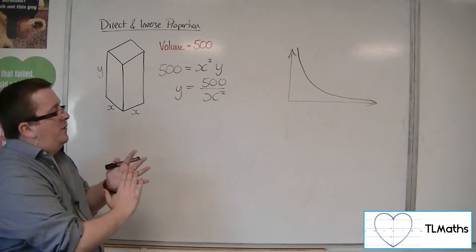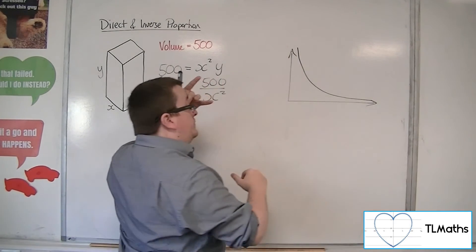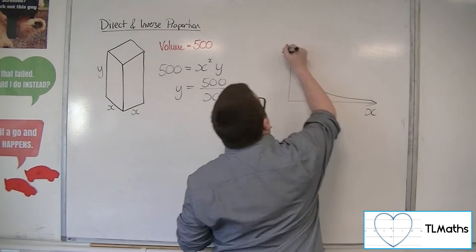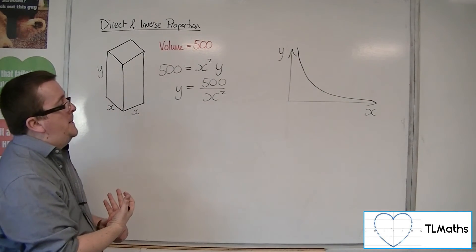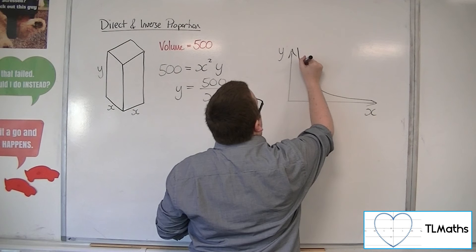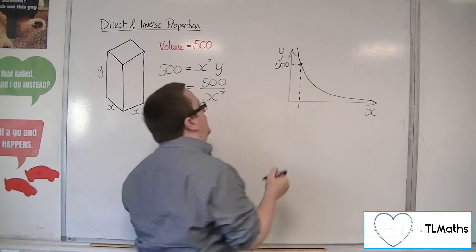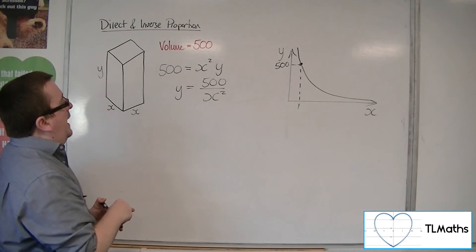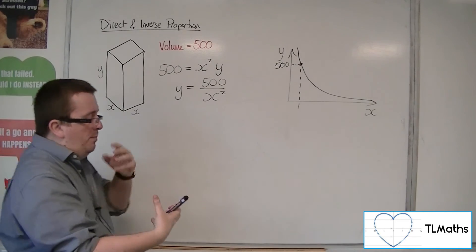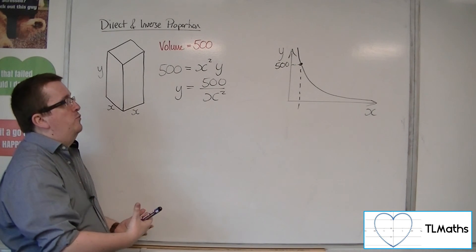Now it also depends how you're going to graph it. Because you could graph it as x squared against y, and you would get a reciprocal graph. Or you might want to represent it just as x against y, in which case you would have y equals 500 over x squared. You might want to plot a singular point — so when x is 1, for example, we would have a y value of 500. And this is what the graph would look like. This is how the inverse proportion we've just looked at is linking in with the graphs we have previously investigated.